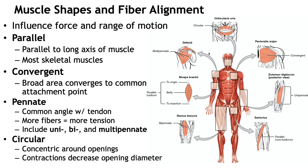Getting into some of the muscle shapes and fiber alignments, you can have different types of fascicle organization. You can have circular, also called sphincter muscles, in which the fascicles are arranged in concentric rings — an example is the orbicularis oris. You can have convergent, when the muscle has a broad origin and the fascicles converge towards a single tendon or insertion, for example the pectoralis major. You have parallel, in which the long axis of the fascicles run parallel to the long axis of the muscle — these are generally strap-like muscles, for example the sartorius and the biceps brachii.